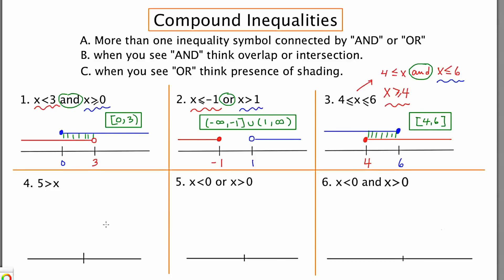Now, number 4 is actually not a compound inequality, but I put it here just to stress the teaching tip used in example 3. And that is, when the variable is on the right, it's in your best interest to make the maneuver to switch it around. I'm going to take the X and the 5 and swap their positions. Thinking of the inequality like an alligator's mouth eating the 5, I'm going to make that consistent in my second presentation. So I'm going to put 5 on the number line and say X is less than 5: open circle and shade to the left. We can describe this solution set with interval notation as negative infinity comma 5.